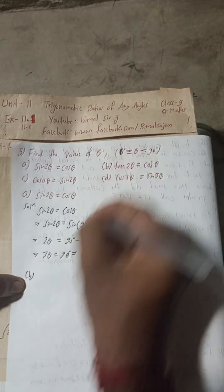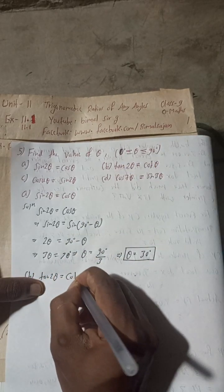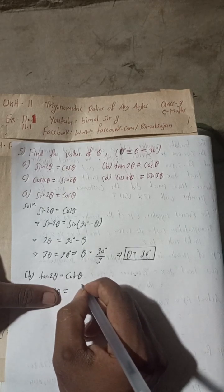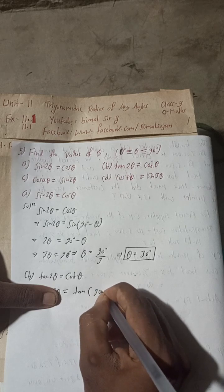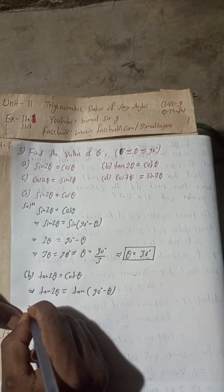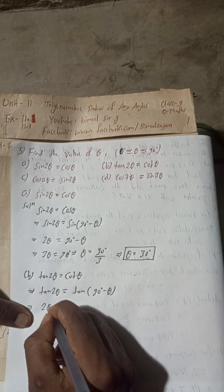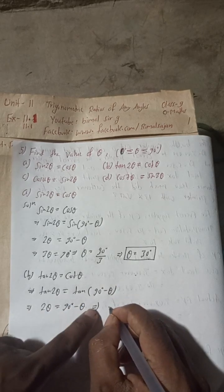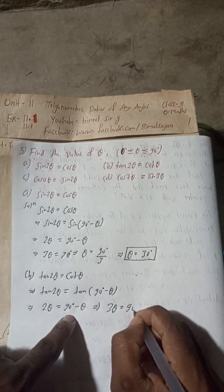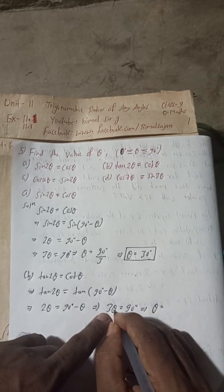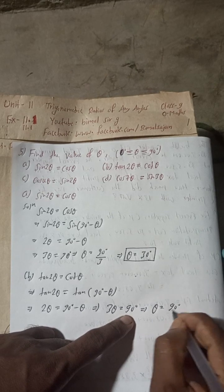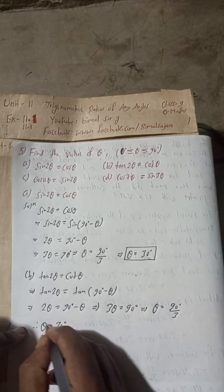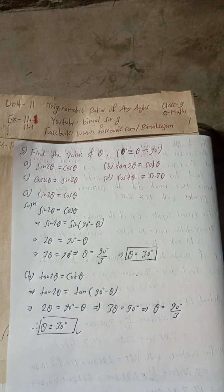Part b: tan 2θ = cot θ. Now, cot θ can be written as tan(90° − θ). So this implies tan 2θ = tan(90° − θ). Since both sides have tan, we equate: 2θ = 90° − θ. Bringing −θ to the left gives 3θ = 90°, therefore θ = 90° ÷ 3 = 30°. That is the answer for part b.